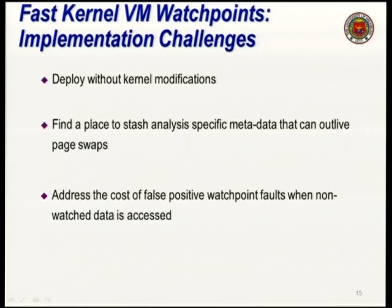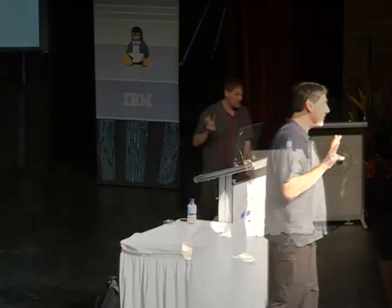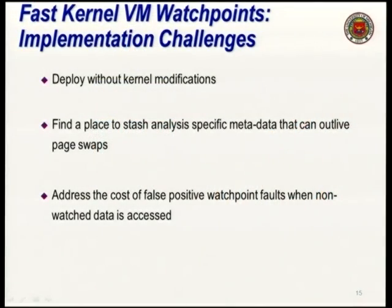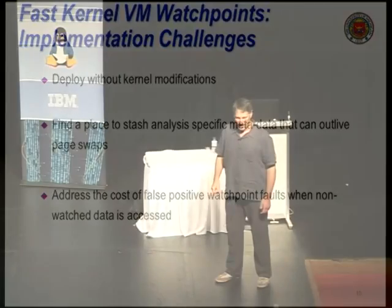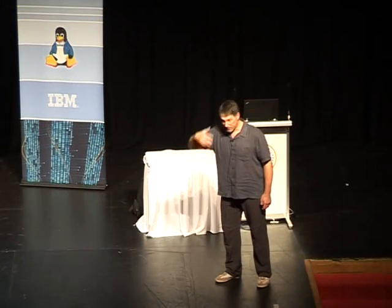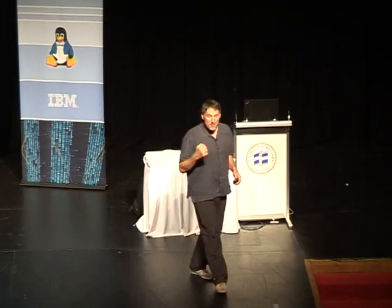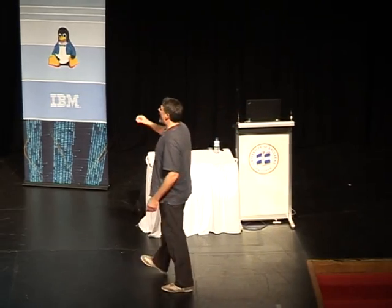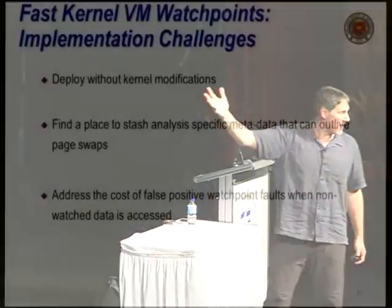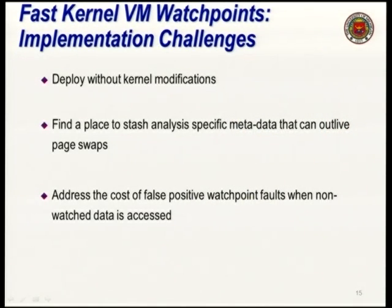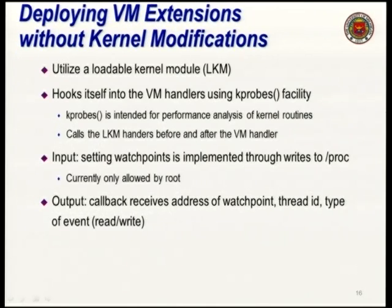So let's go into the fast kernel VM work we did. Three goals: first, no kernel modifications. In the past, when you want to deploy anything requiring a kernel modification, it will only be deployed in your own lab — people don't want to mod their kernels. So we need to change page fault semantics without modifying the kernel. Second, we need a place to stash all that underlying data. Third, we need to address the cost of those false positives.